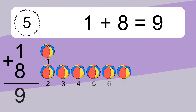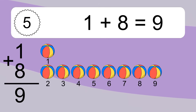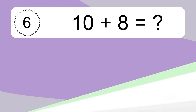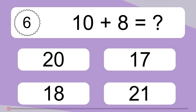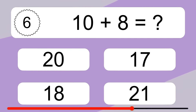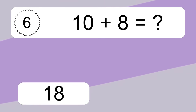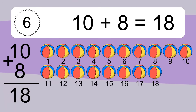1 plus 8 equals what? 1 plus 8 equals 9. Let's count it. 1, 2, 3, 4, 5, 6, 7, 8, 9.